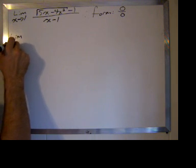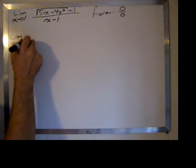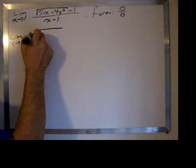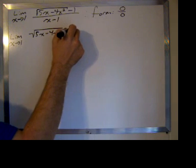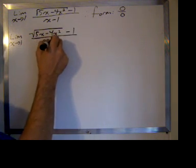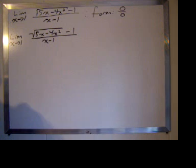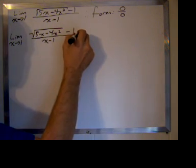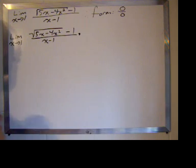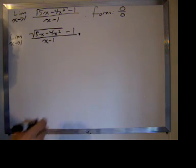I'm just going to recopy it. The limit as x goes to 1 of the square root of 5x minus 4x squared minus 1 divided by x minus 1. We have a square root in the numerator and we're evaluating a limit in the form 0 over 0. So we want to multiply the numerator and the denominator by the conjugate of the numerator, rationalizing the numerator. Maybe in a previous course you were asked to rationalize the denominator. Well, now we're being asked to rationalize the numerator.